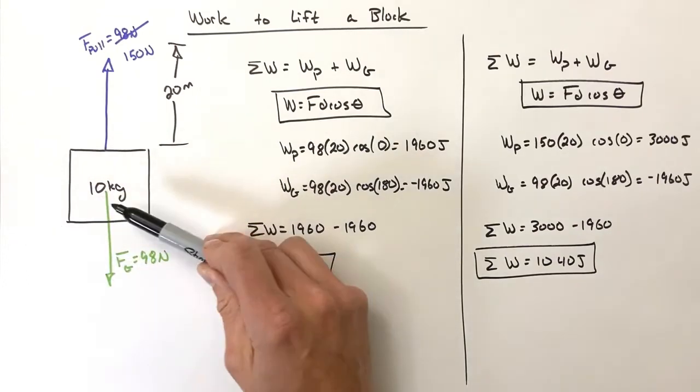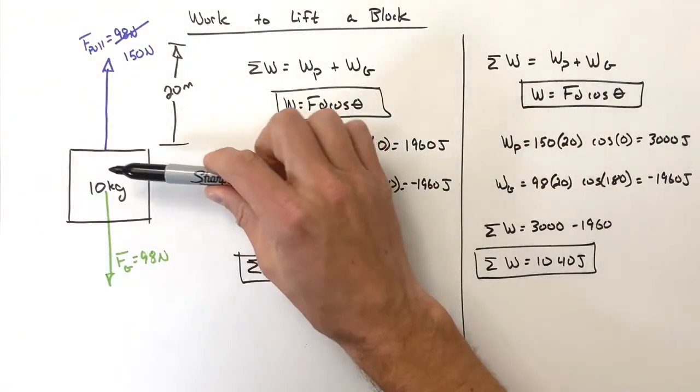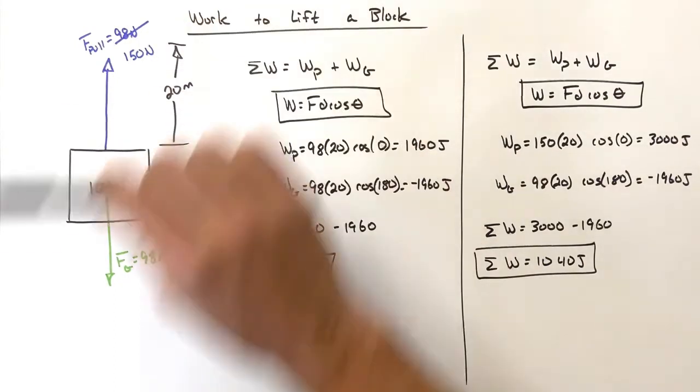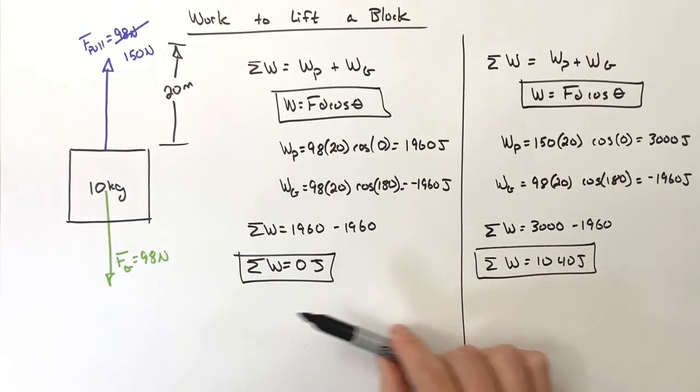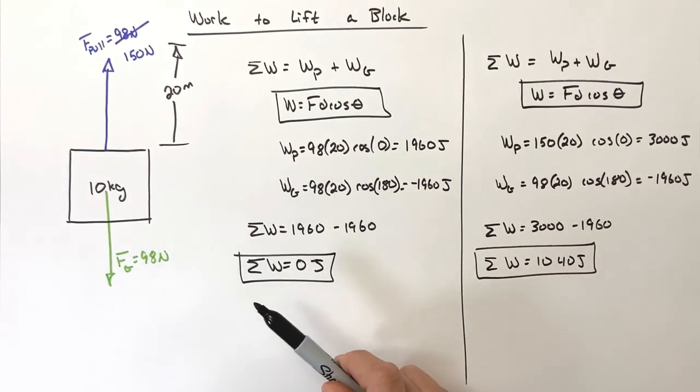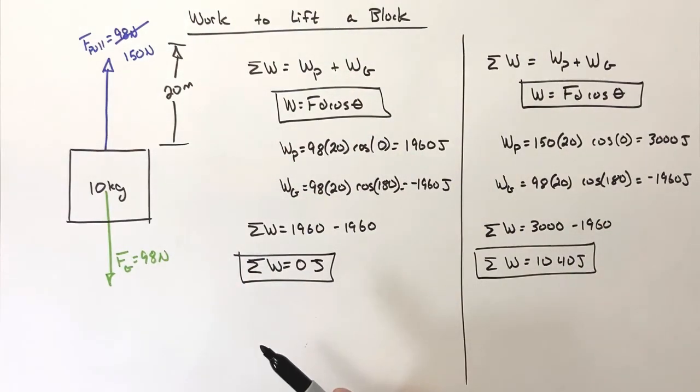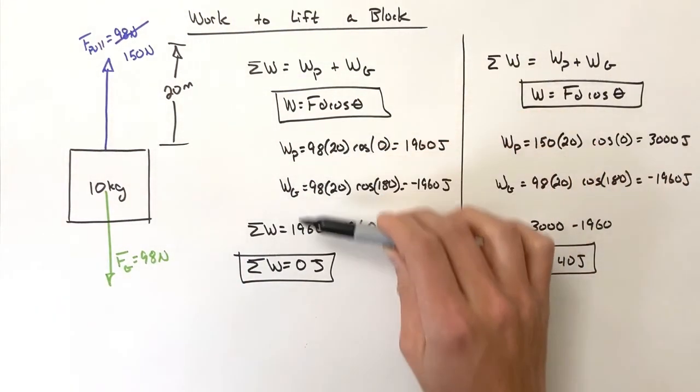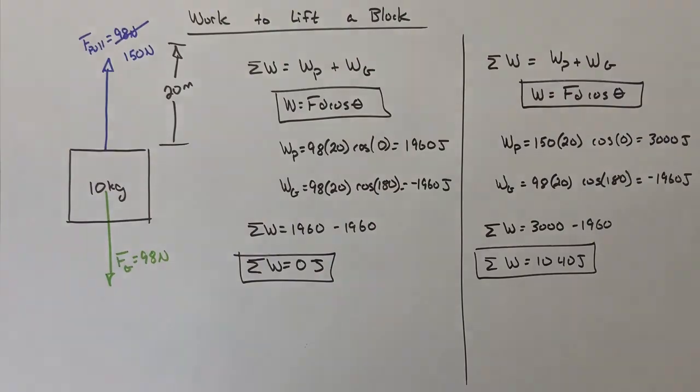This means the block has gained energy as it moves upward. Now if we forget about energy for a second, we know that this block is going to speed up as it moves upward, and we'll see later on how work ties into the velocity of an object when we start talking about kinetic energy. We'll look at how to organize all of this when we get to the work energy theorem, but for now we're just finding the works by individual forces and the total work done on objects, which means that's all for now.